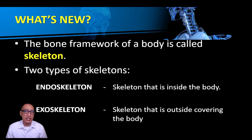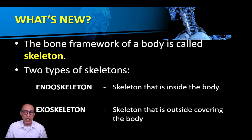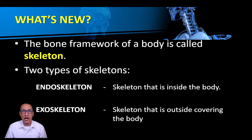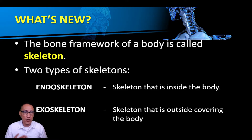Let's insert this for added knowledge: we have two types of skeleton. Number one is the endoskeleton — the skeleton that is inside the body, tulad ng skeleton natin na nasa loob ng ating katawan. Number two is the exoskeleton — the skeleton that is outside, covering the body. Ito ang makikita sa mga organisms na merong shell, like insects, crustaceans, shrimps, lobster, alimango, at kahit yung pagong. But since we are discussing the human skeleton, ang type ng skeleton na ating pinag-aaralan ay endoskeleton.